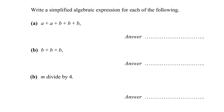Hello everyone, welcome to this video where we are going to write a simplified algebraic expression for each of the following. A plus A will give me 2A — two of them. B plus B plus B — how many are there? 3B, and this will be a positive 3B.